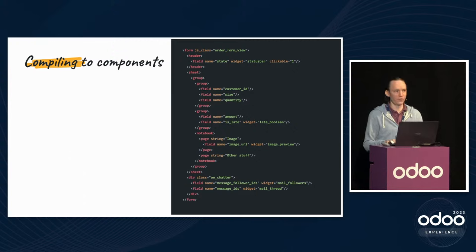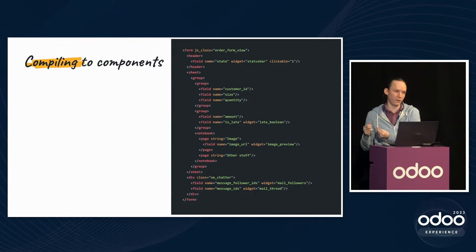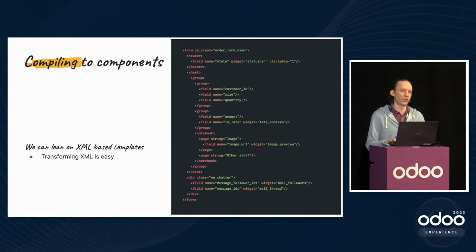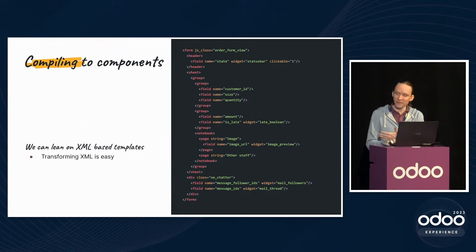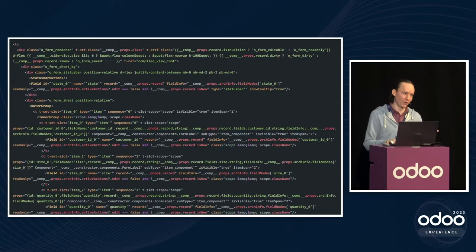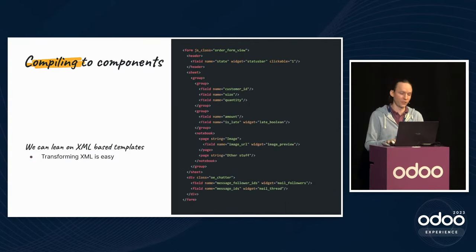This view architecture predates OWL, but to use a modern UI library we need to convert these UI descriptions into actual HTML. XML is easy to transform — we can transform view architecture XML into other XML that OWL understands. This is the actual code compiled when you convert view architecture into OWL components — which is why we have the simplified view description, so nobody has to write it by hand.